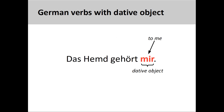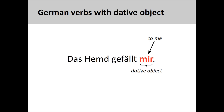Another good rule to remember is whether the preposition 'to' can be used in translating the main idea of the verb into English. The sentence 'das Hemd gehört mir' — the shirt belongs to me — would be an example of this rule. Sometimes you may have to stretch the translation a bit so that it can fit the rules. For example, 'das Hemd gefällt mir' — the shirt pleases me, or I like the shirt — could also be more loosely translated as 'the shirt is pleasing to me.' In this way, you can get a preposition 'to' in the translation, which helps you identify the verb as taking a dative object.